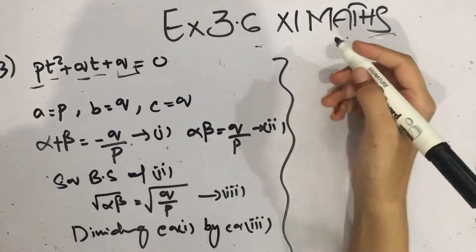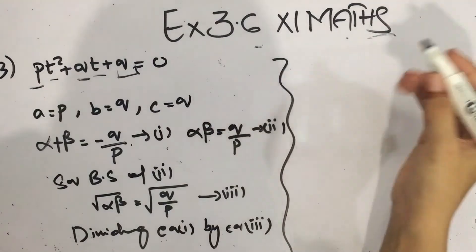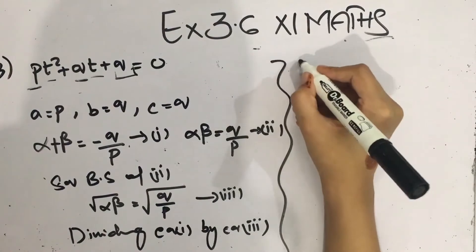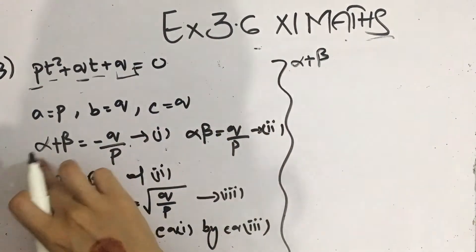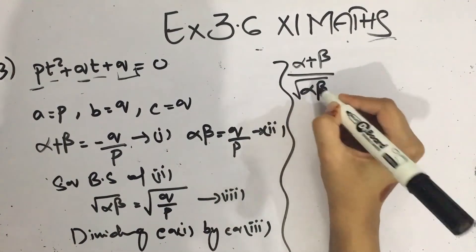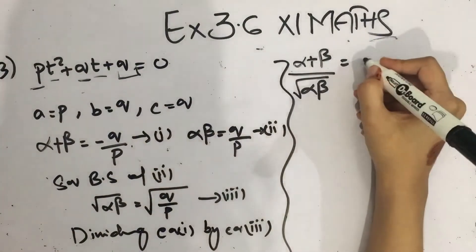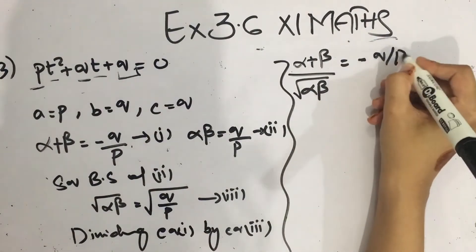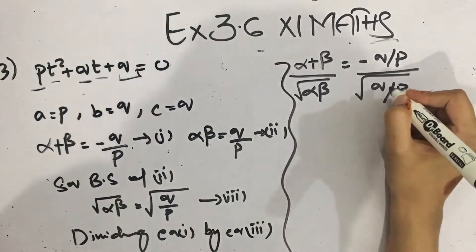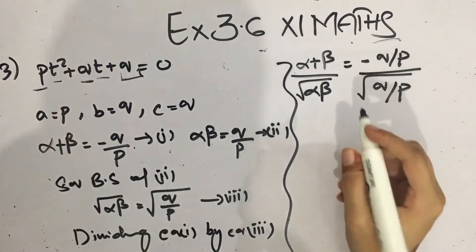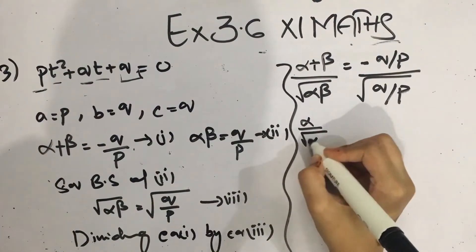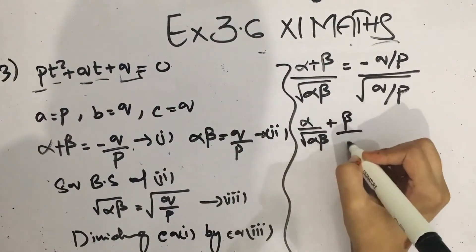You should remember this approach and practice it. When we divide equation 1 by equation 3, on the left side we get (α + β) divided by √(αβ), and on the right side we get (−q/p) divided by √(q/p). The left side can be written as α/√(αβ) plus β/√(αβ).